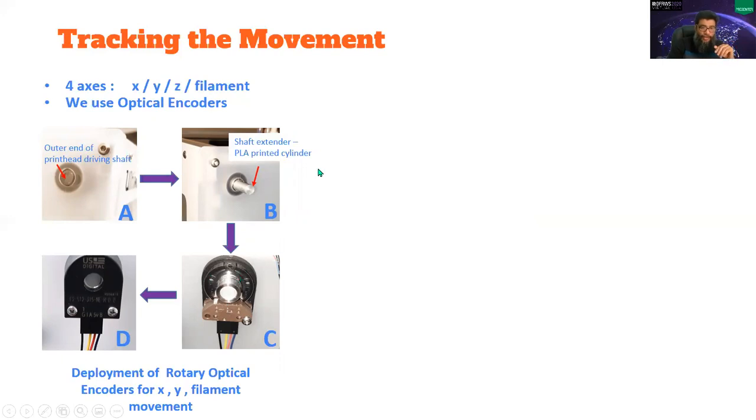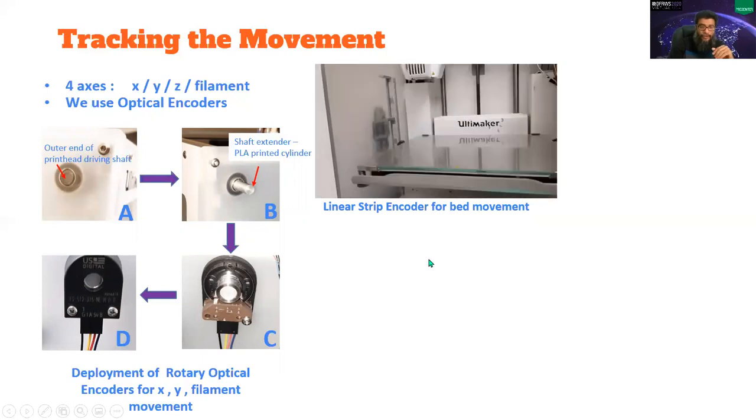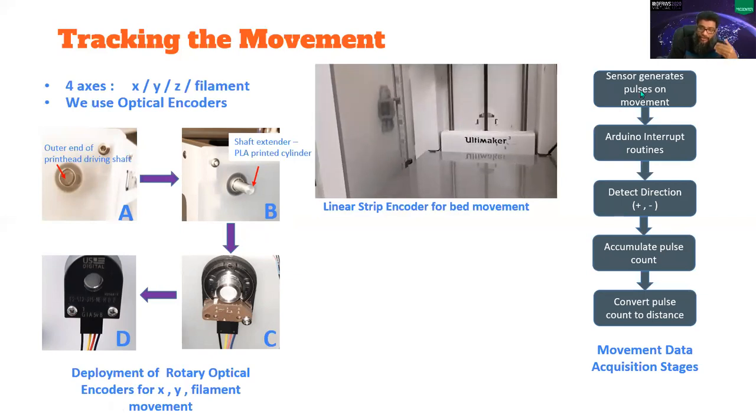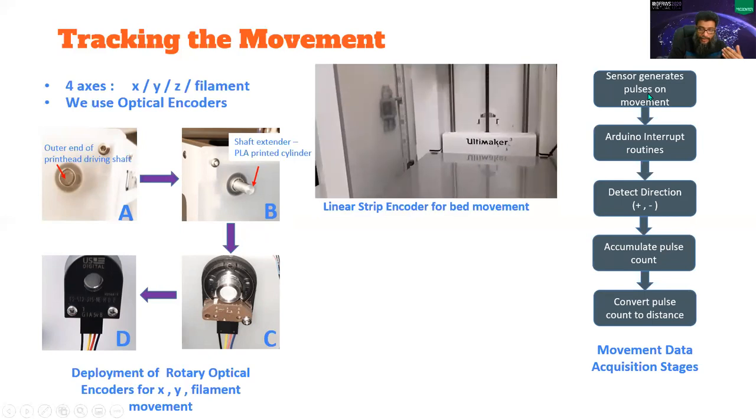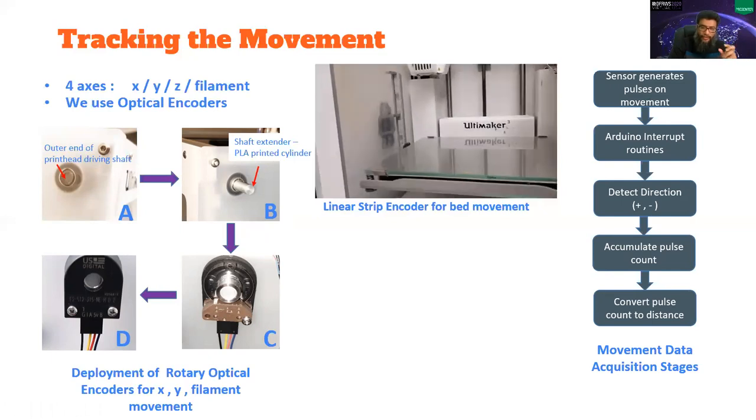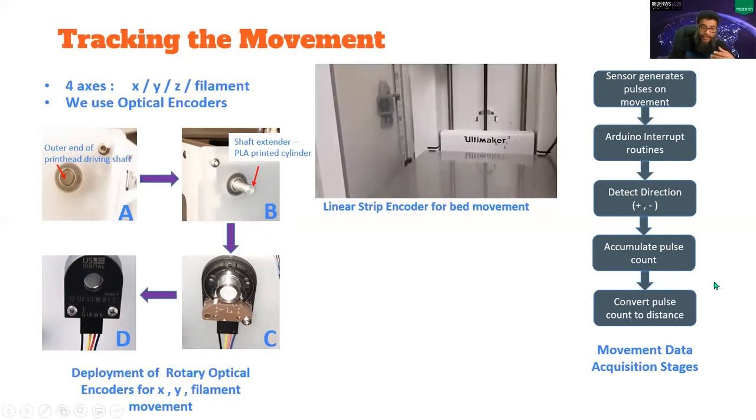And for the bed movement, we deployed a linear encoder, optical encoder to track the bed movement. What happens is that the sensor generates pulses whenever there is a movement and those pulses trigger interrupts in Arduino and we deploy some direction detection algorithms and then accumulate the pulses and finally convert those pulses into distance.